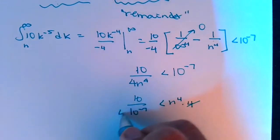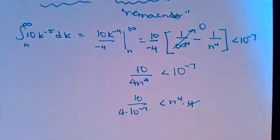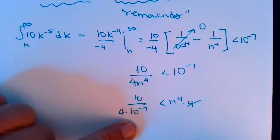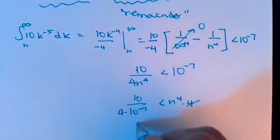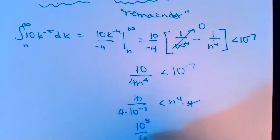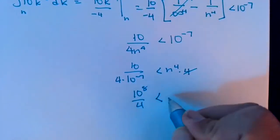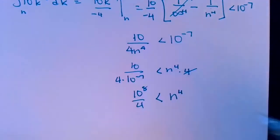I want the 4 to be back over here. So 10 divided by 10 to the negative 7, well, that'll be a 10 to the 8th over 4 has to be less than n to the 4th.